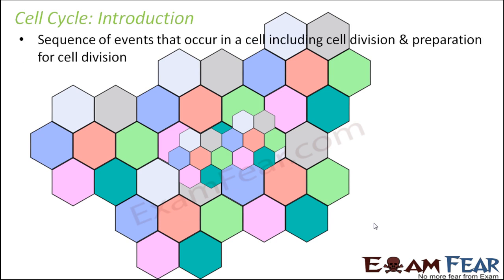So how do we define cell cycle? It is nothing but the sequence of events that occur in a cell, including cell division and preparation for cell division.